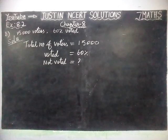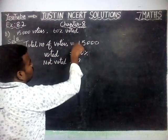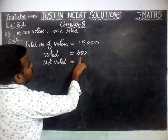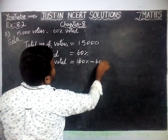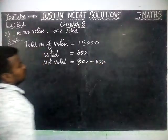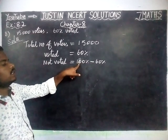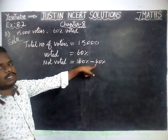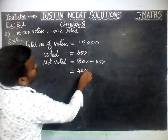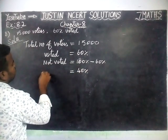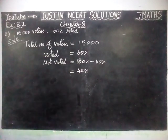Now we are going to find that. Not voted is equal to — from the total, we are going to subtract 60. So, 100% minus 60%. Total minus voted. We found that did not vote, or not voted, is equal to 40%.